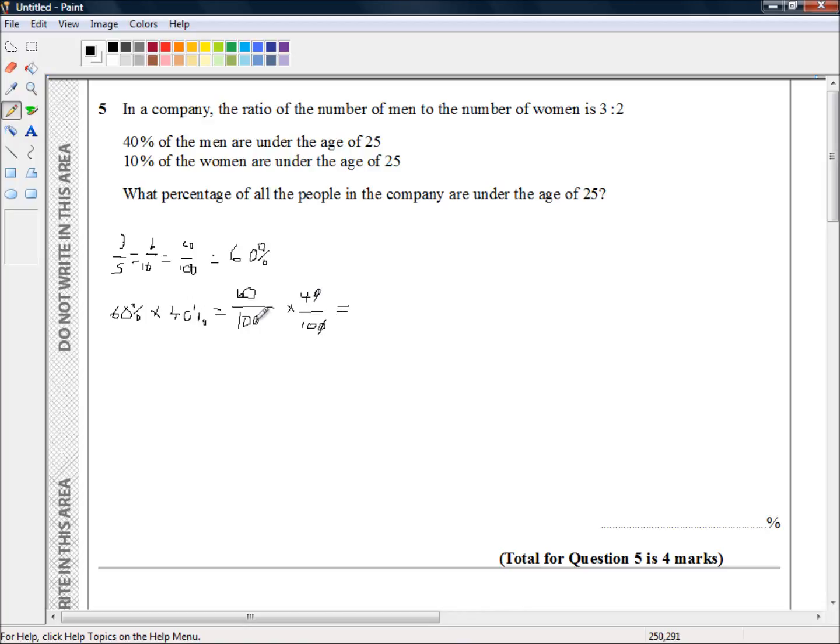We've got 6 times 4 over 10 times 10. 6 times 4 is 24 over 10 times 10, which is 100. Out of 100, that's our textbook definition of percent. So 24% of the entire workforce are under-25 males.